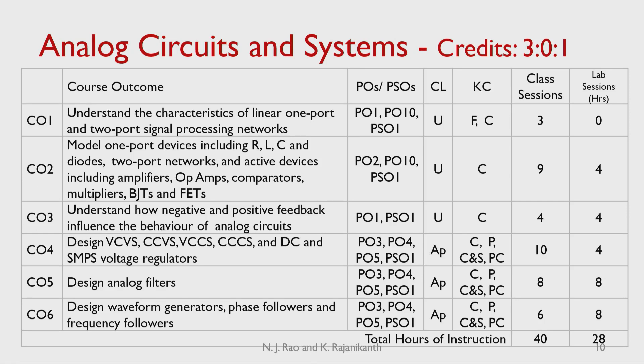As an example, let us look at the course of Analog Circuits and Systems with credits of 3-0-0-1: three credits of theory and one credit of lab. The course outcomes are given and the POs and PSOs addressed by each CO are also mentioned. For example, CO1 is related to PO1, PO10, and PSO1, and has three classroom sessions with no lab sessions. CO6 addresses PO3, PO4, PO5, and PSO1, with six classroom sessions and eight laboratory hours. We determine what POs and PSOs are addressed by each CO, and we have already tagged each CO with the number of classroom, tutorial, and lab sessions.